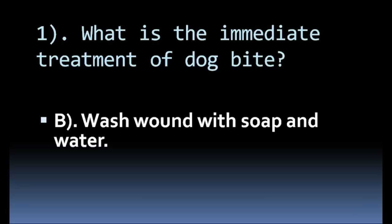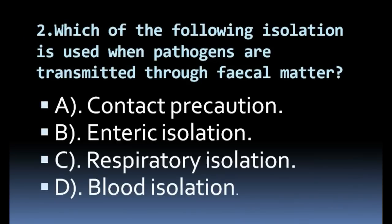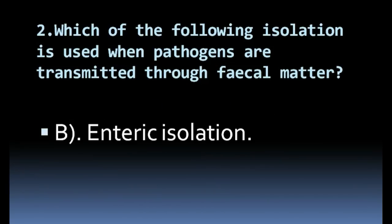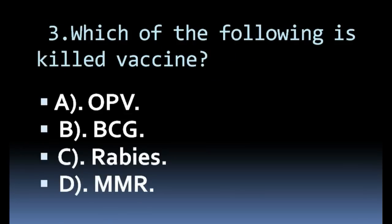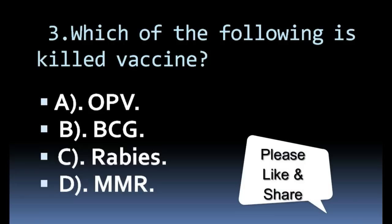Which of the following isolation is used when pathogens are transmitted through fecal matter? Options: contact precaution, enteric isolation, respiratory isolation, blood isolation. Correct answer: enteric isolation.